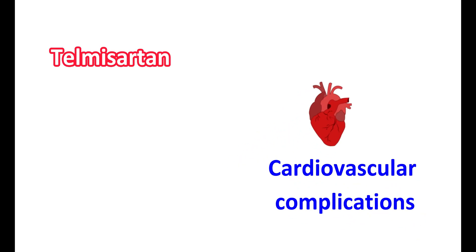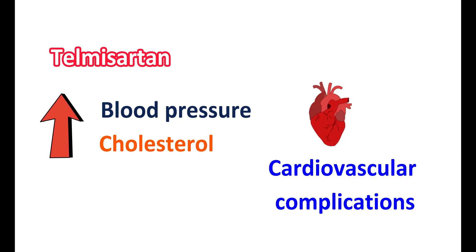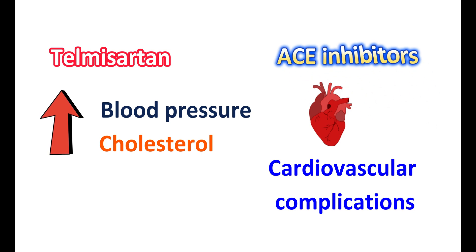Telmisartan can also be used for reducing cardiovascular complications. In people with elevated blood pressure, the risk of cardiovascular complications is enhanced, and in people with chronic hypertension cardiovascular risk is also increased. When combined with other factors like elevated cholesterol levels, it may lead to atherosclerosis, blocking the arteries and further increasing cardiovascular risk. It is essential to reduce cardiovascular risk by controlling blood pressure. While ACE inhibitors can be used, in people who cannot tolerate them, ARBs like telmisartan can be used instead.